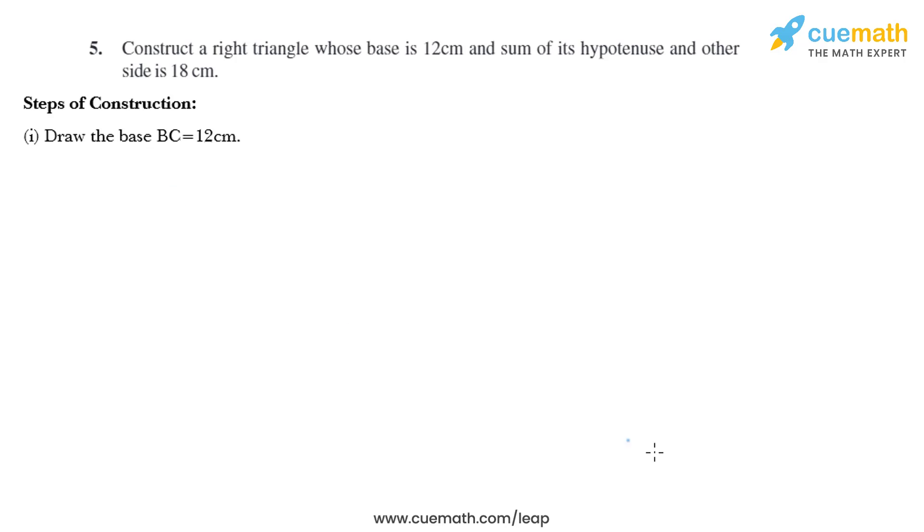So let's draw the base that is BC equal to 12 centimeter. So this is BC and that equals 12 centimeter. Now in the next point we need to make an angle of 90 degrees using a protractor.